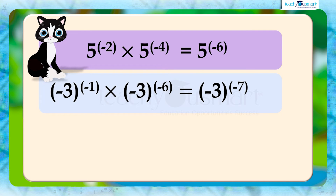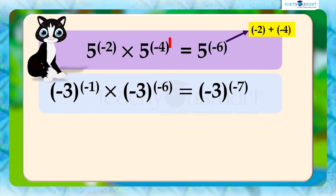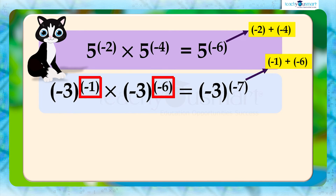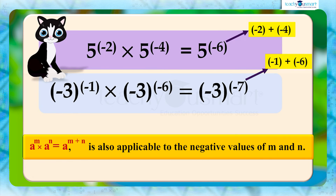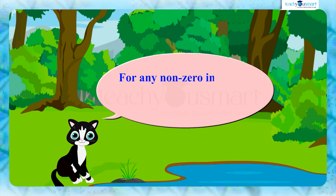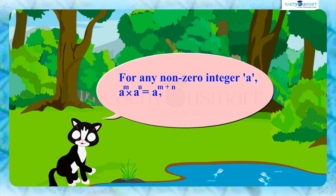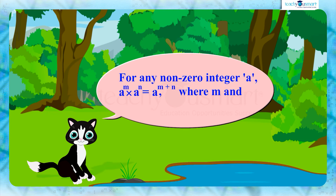In these two examples we can see that the exponent in 5 raised to minus 6 is the sum of the exponents minus 2 and minus 4, and the exponent in minus 3 whole raised to minus 7 is the sum of the exponents minus 1 and minus 6. That is, a raised to m multiplied by a raised to n equals a raised to m plus n is also applicable to negative values of m and n. So we can say that for any non-zero integer a, a raised to m multiplied by a raised to n equals a raised to m plus n, where m and n are integers.